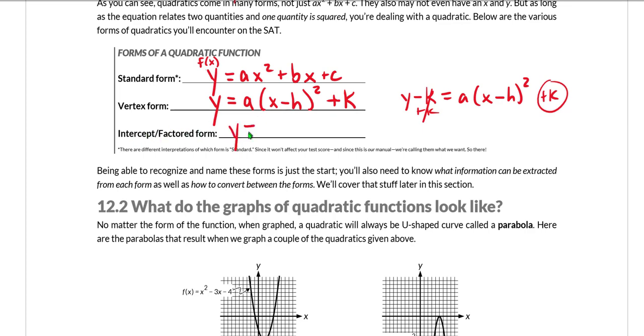Intercept or factored form is going to be y = a(x - p)(x - q).